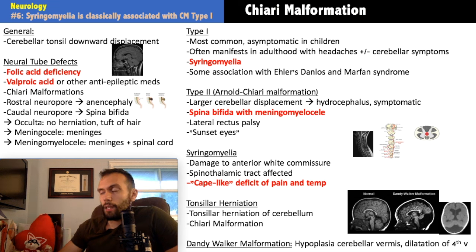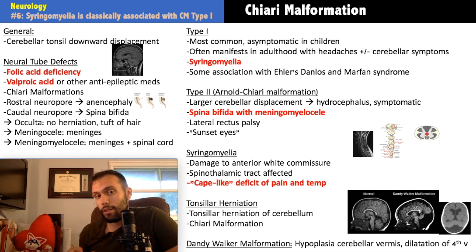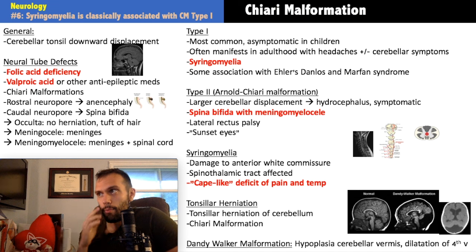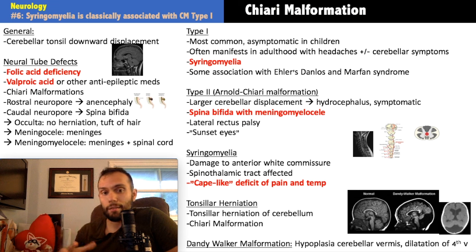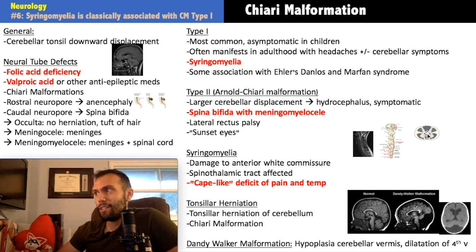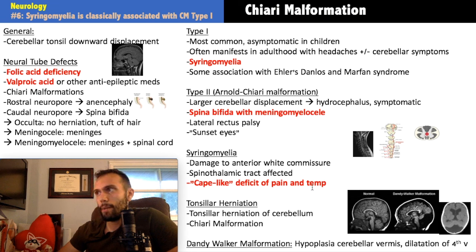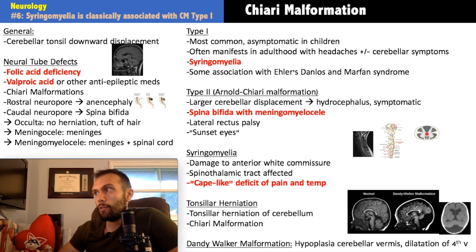If the syrinx extends to T1–T4, Horner syndrome may also occur. If anterior horns are involved, muscle weakness and atrophy appear. The classic presentation: cape-like loss of pain and temperature, headaches, cerebellar symptoms, possibly a connective tissue disease — get an MRI of the cervical and thoracic spine looking for the cavitation. On MRI you can see the cyst-like area lighting up within the spinal cord.